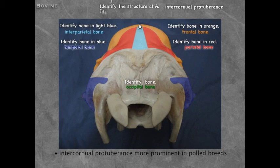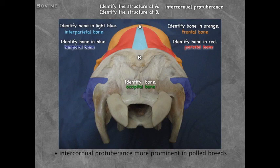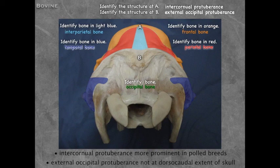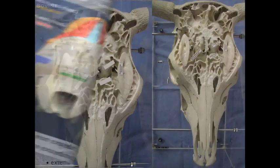Even though it is not dorso-caudal as in the horse, structure B is the external occipital protuberance — that is where the funicular portion of the nuchal ligament attaches.